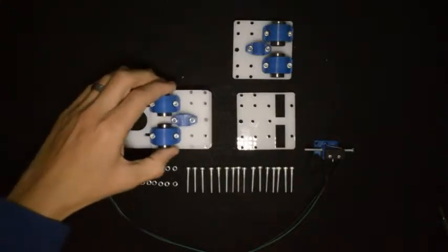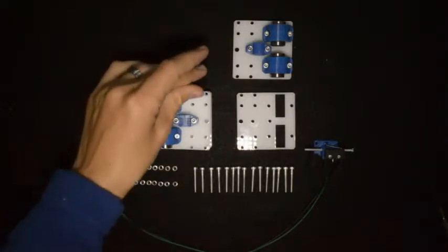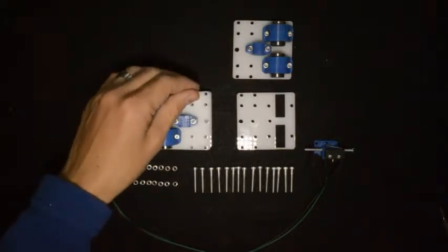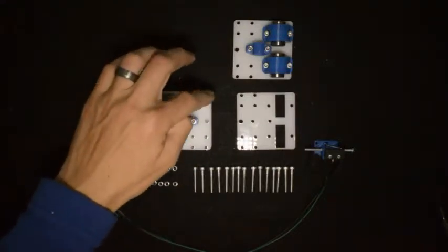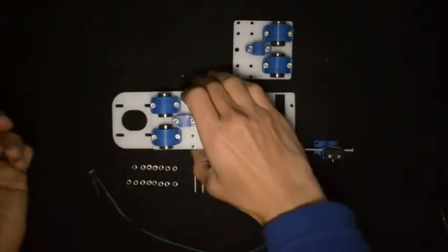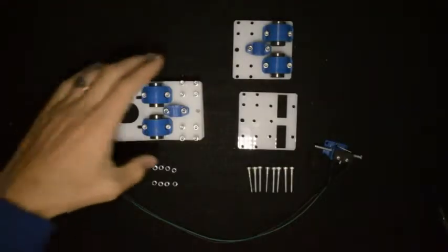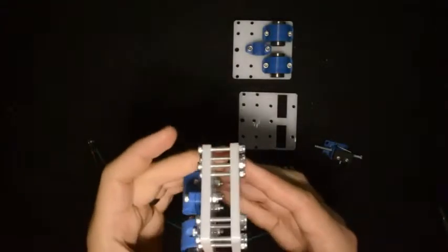Then we will take this assembly, put it on top of this one. These screws will go into those four holes and those four holes, and just hand tighten the lock nuts at the back. When you are done with that, it should look something like this.